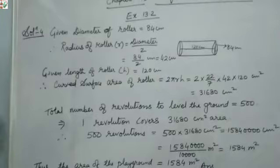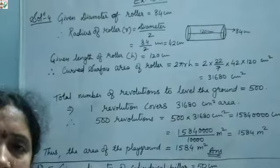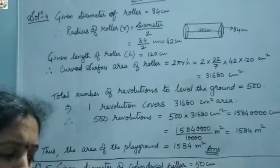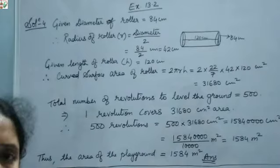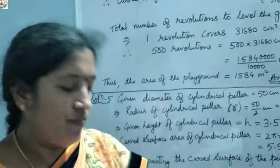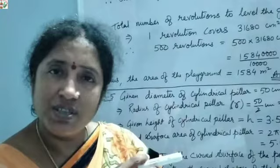The diameter of a roller is 84 cm and its length is 120 cm. It takes 500 complete revolutions to move once over to level a playground. We have to find the area of the playground in meter square, which means we need to find the curved surface area first.